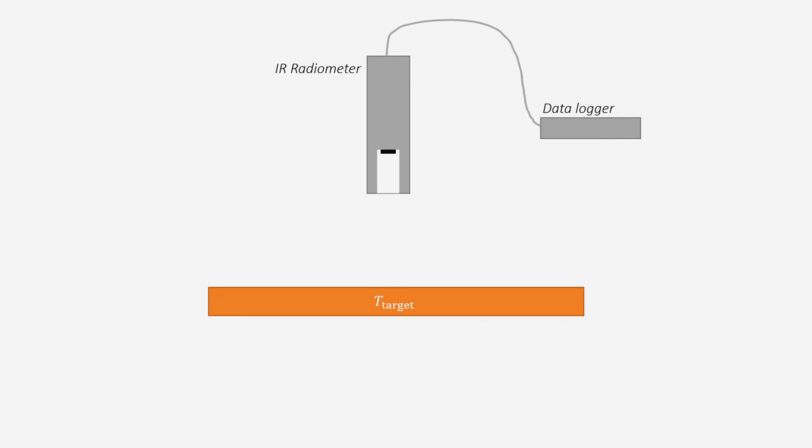The IR radiometer measures the temperature of an object by measuring the infrared radiation of the object. Let's say the temperature of the object we're trying to measure is T target. Because the object contains some thermal energy, it radiates some heat in the form of infrared light given by Planck's law of blackbody radiation. Let's call this amount of radiation E target.